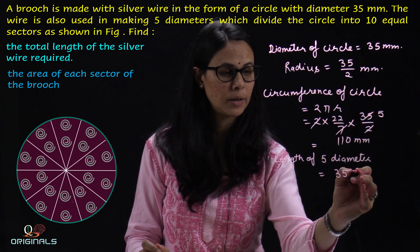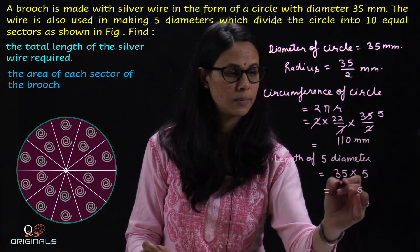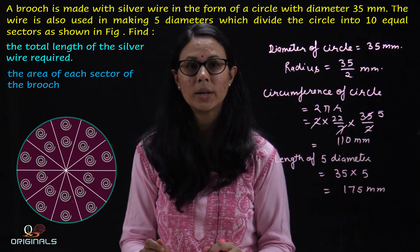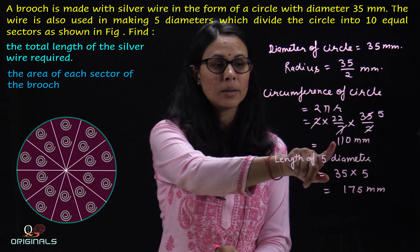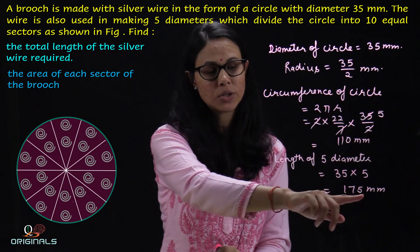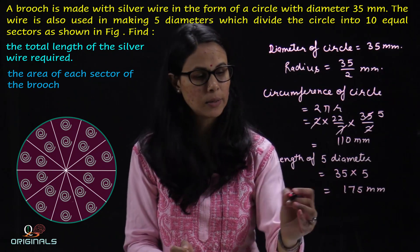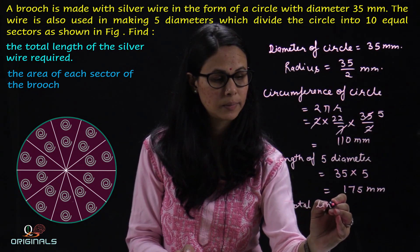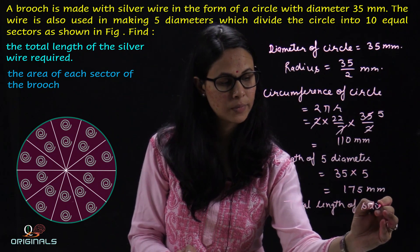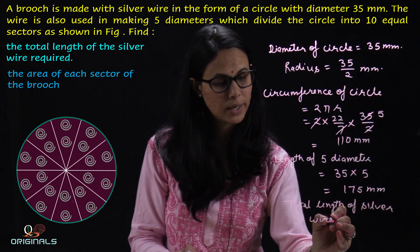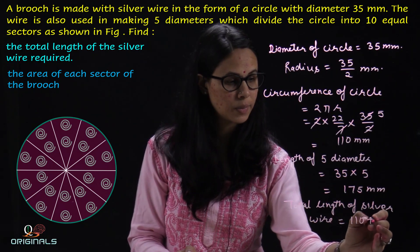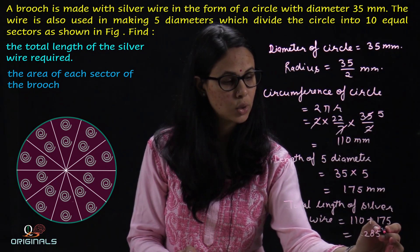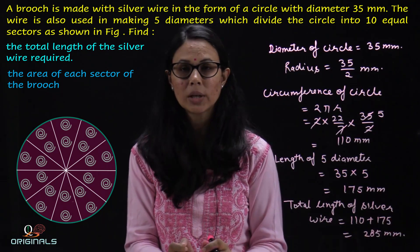The length of 1 diameter is 35 mm. So the length of 5 diameters is 5 × 35 = 175 mm. The circumference requires 110 mm of wire and the 5 diameters require 175 mm. So the total length of silver wire required is circumference plus 5 diameters: 110 + 175 = 285 mm.